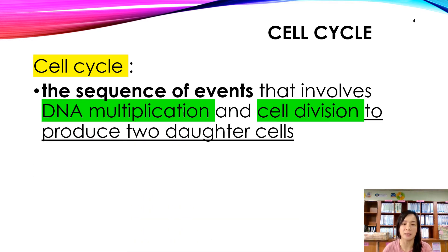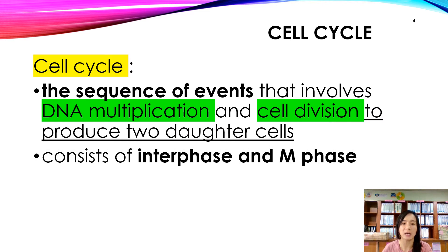What is the definition of cell cycle? The cell cycle is the sequence of events that involve DNA multiplication and cell division in order to produce two daughter cells. This cell cycle consists of interphase and M-phase.